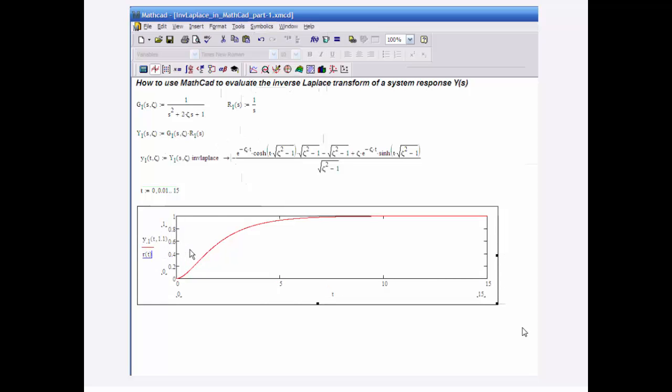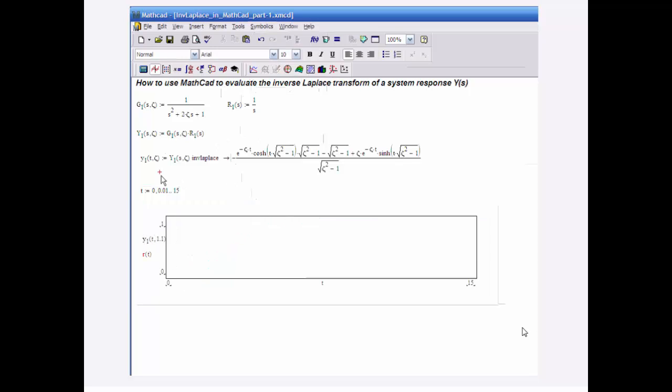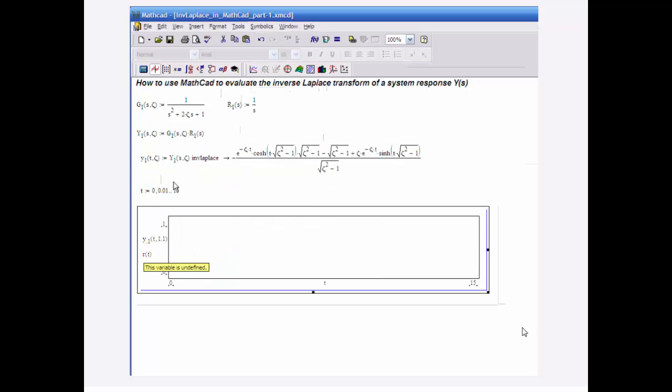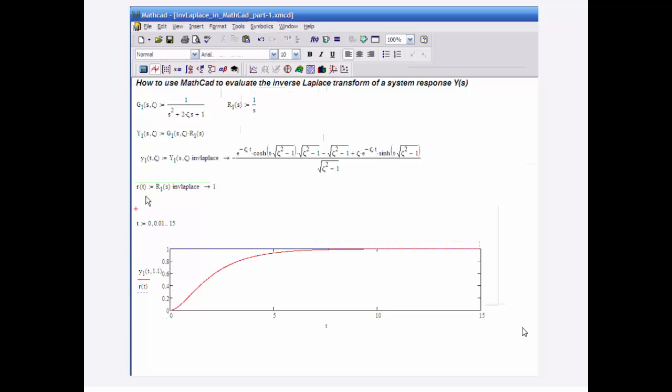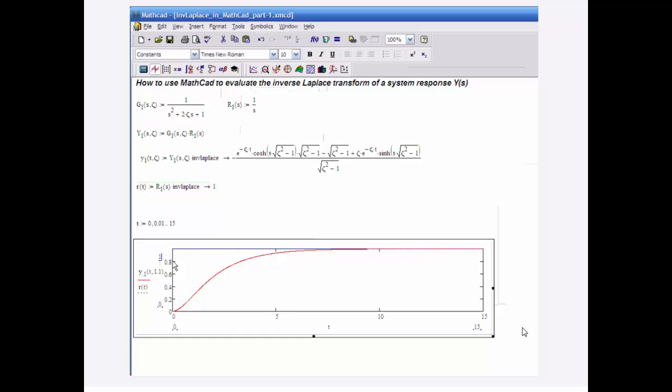Let's say R of T. Well, R of T is not defined, so let me add R of T here. R of T is equal to R1 of S, and you can just type this out as well. So there we have 1.1.